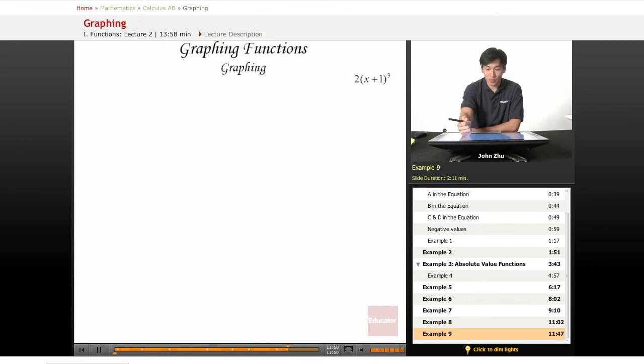For our final example, we're looking at this function. We notice there's a cube term, so the original function is probably x cubed, and we have our constants here that will manipulate the graph.